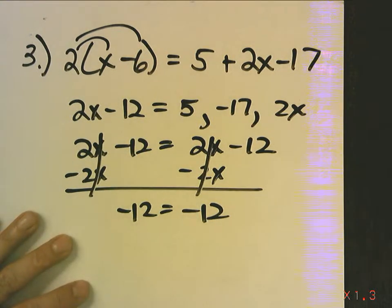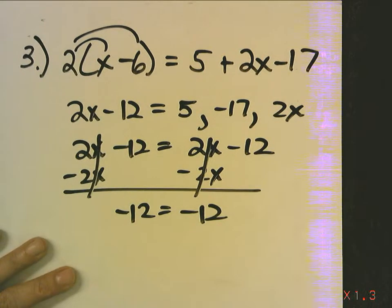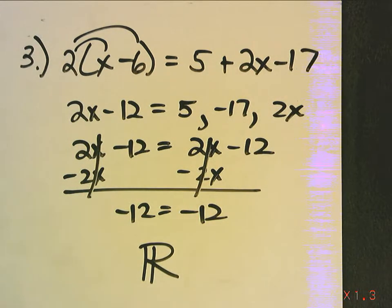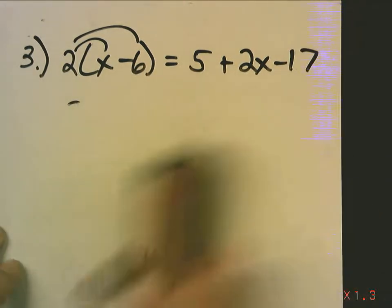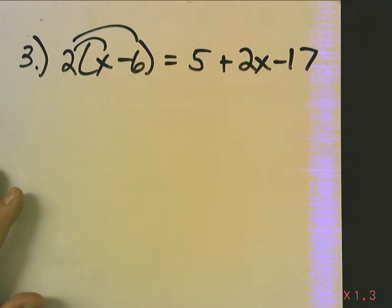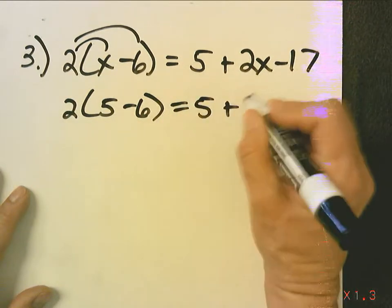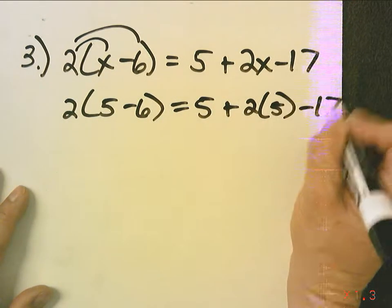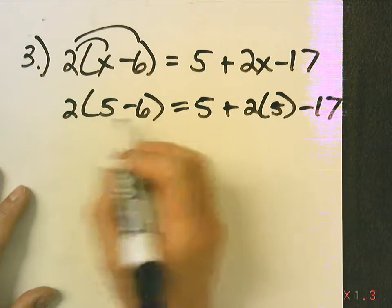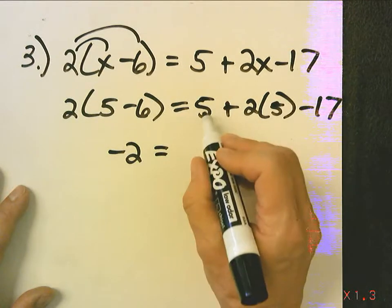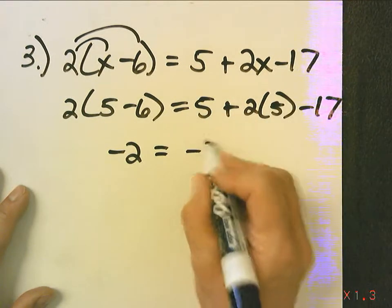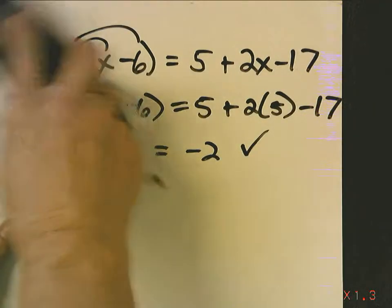If your variable disappears, now you can only do this if your variable disappears, and you end up with a true statement, that means your answer is all real numbers. And that's how we write all real numbers. That means any number I pick for x will work. I'm just going to pick a random number 5. Let's see if it works. 2 times 5 minus 6, does that equal 5 plus 2 times 5 minus 17? I don't know. Let's see. 5 minus 6 is negative 1 times 2 is negative 2. This becomes 5 plus 10 is 15 minus 17 is negative 2. Look, it works. So, when your variable disappears, don't automatically think you did something wrong. It could be that the answer is all real numbers.